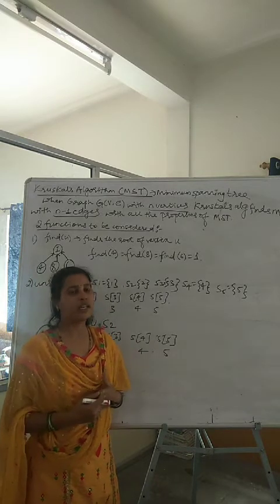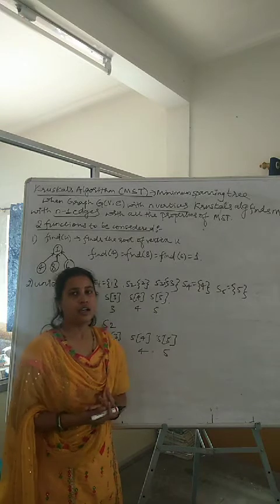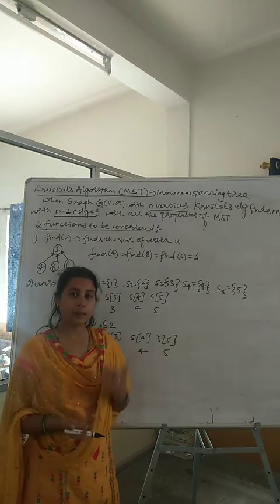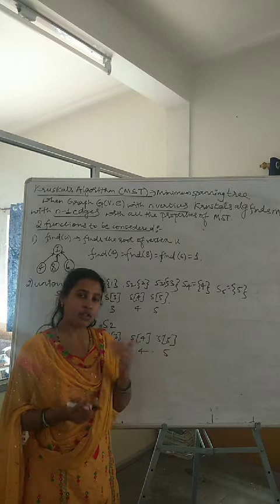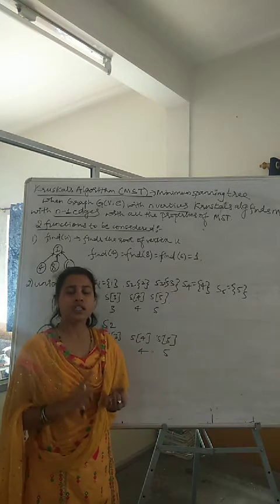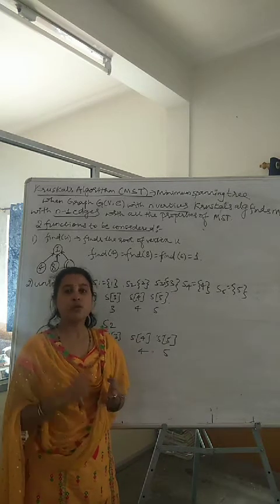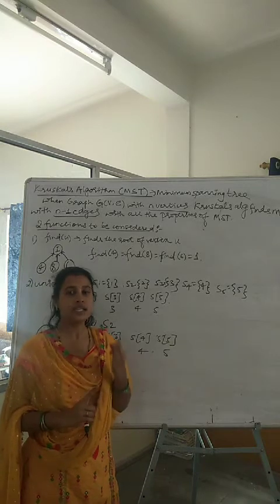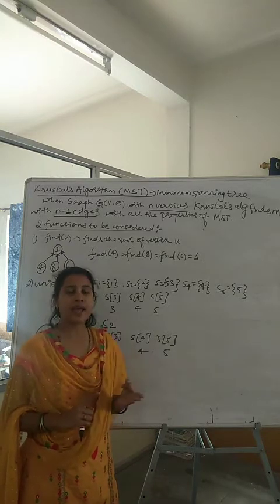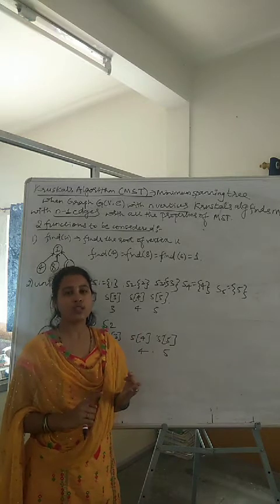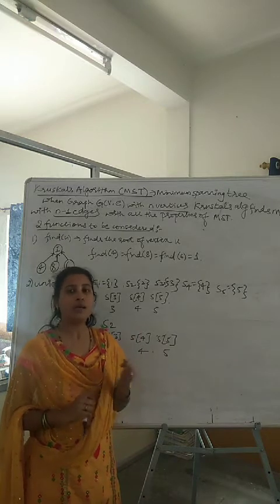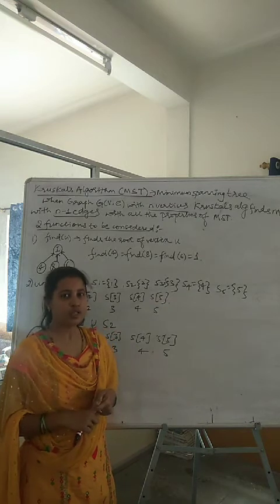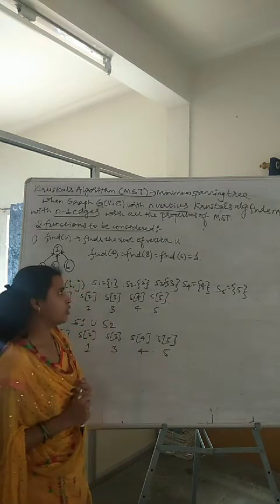Here again we are finding the minimum spanning tree. What is a spanning tree? A spanning tree is a subgraph of a graph where all the vertices should be included, they should be connected, and there should be no cycle in the subgraph. That is called a spanning tree, and the spanning tree which has the minimum cost is called the minimum spanning tree. We are going to find the minimum spanning tree using Kruskal's algorithm.